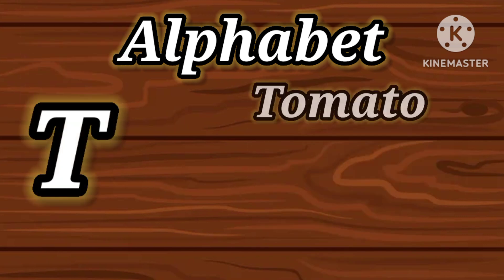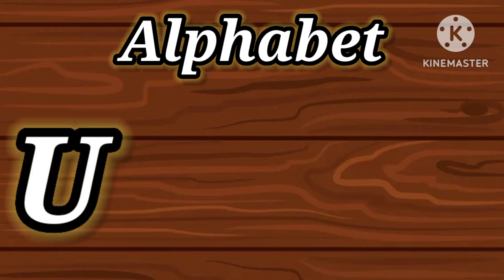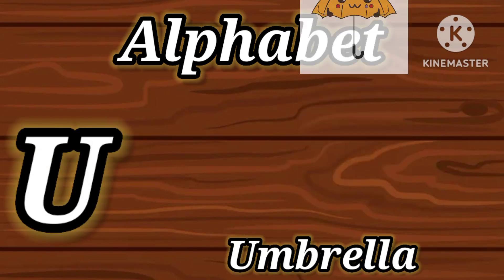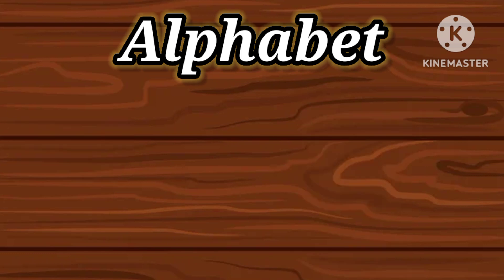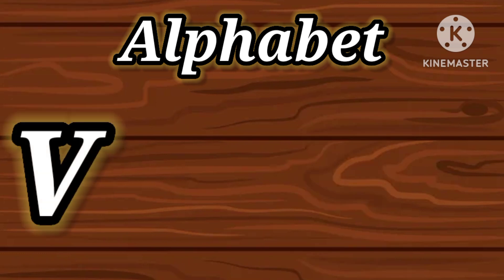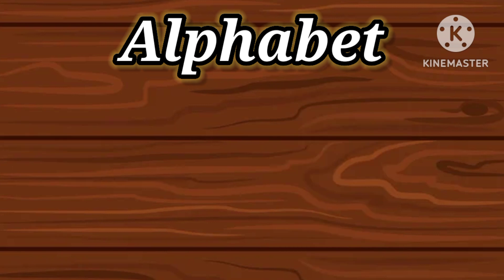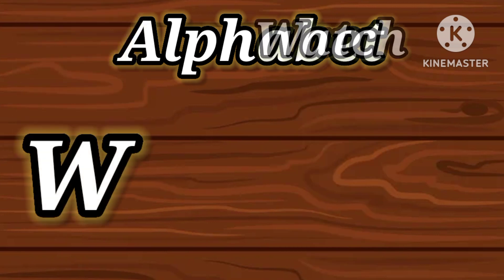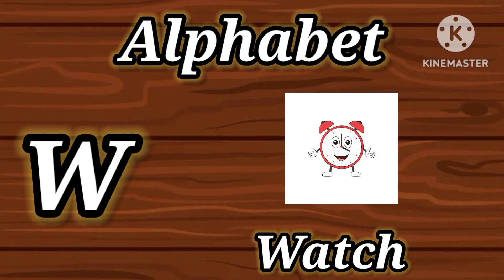T for Tomato. T-O-M-A-T-O, Tomato. U for Umbrella. U-M-B-R-E-L-L-A, Umbrella. V for Van. V-A-N, Van. W for Watch. W-A-T-C-H, Watch.